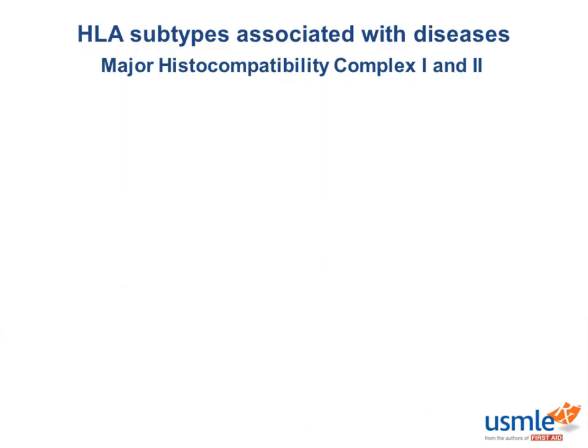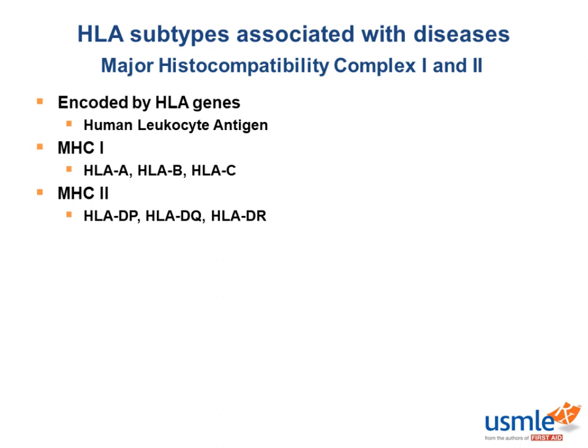Hi everyone, this is the lecture on HLA subtypes associated with diseases. It's important to know that MHC1 and MHC2 are proteins encoded by genes referred to as HLA genes, which stands for human leukocyte antigen. MHC1 is encoded by HLA-A, HLA-B, and HLA-C. MHC2 is encoded by HLA-DP, HLA-DQ, and HLA-DR.